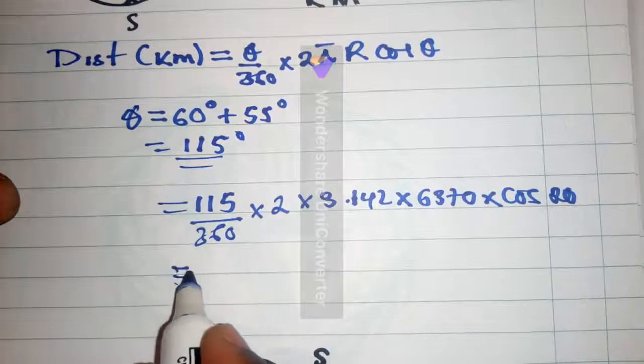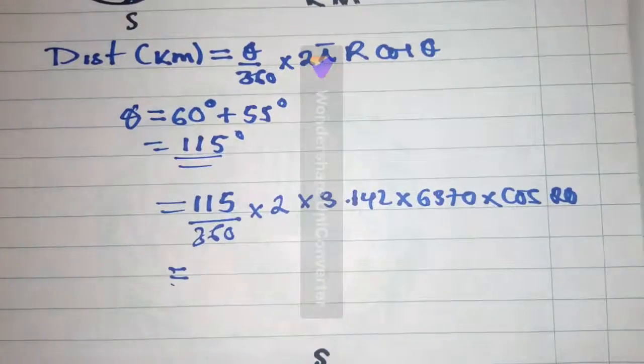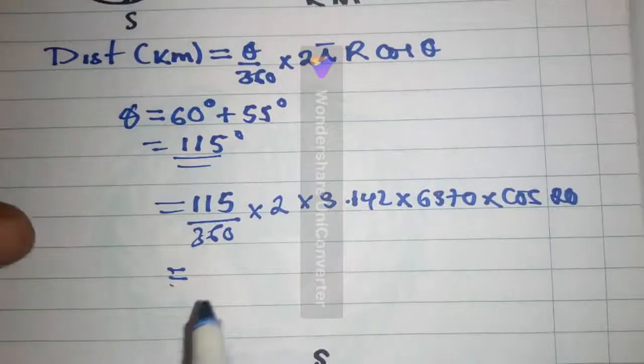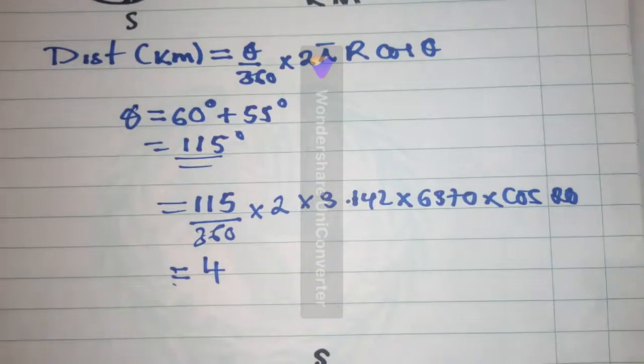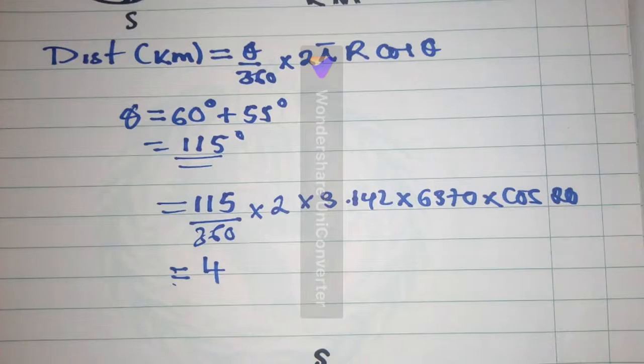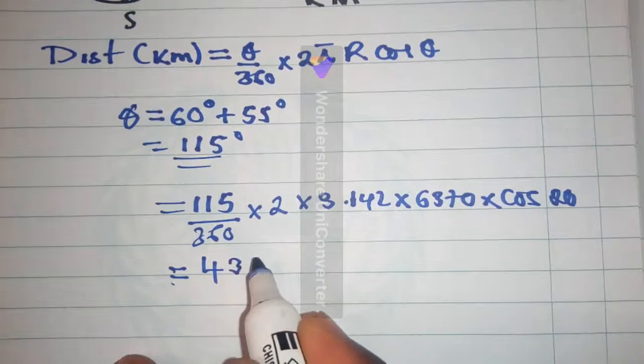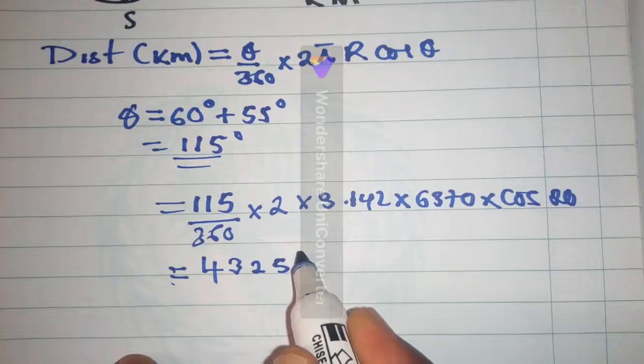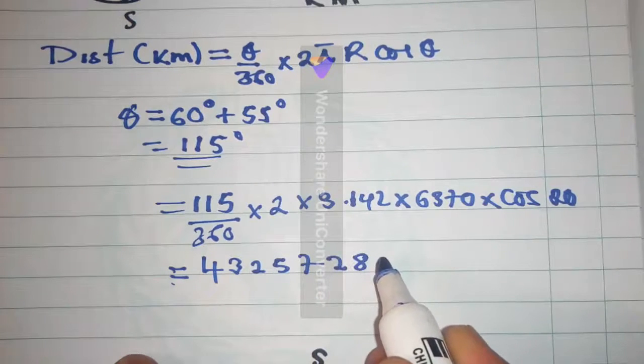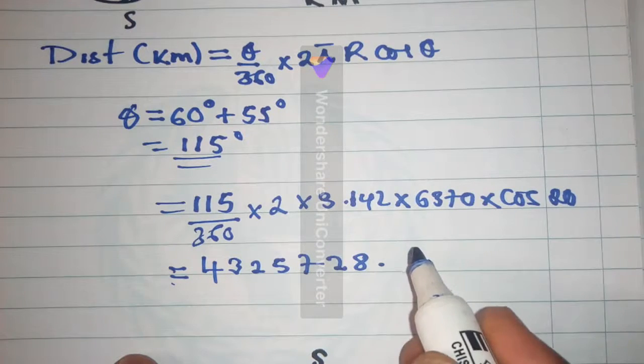So, when we multiply everything on top, we'll get something like... Let me check on my calculator. It will be 4325728. Make sure the calculator is in degrees.